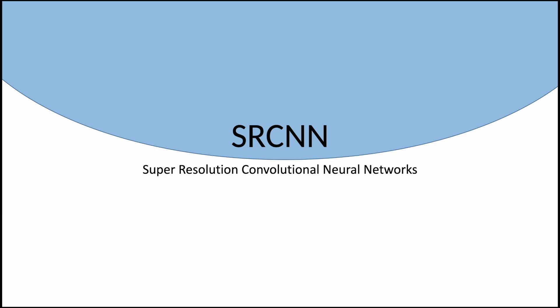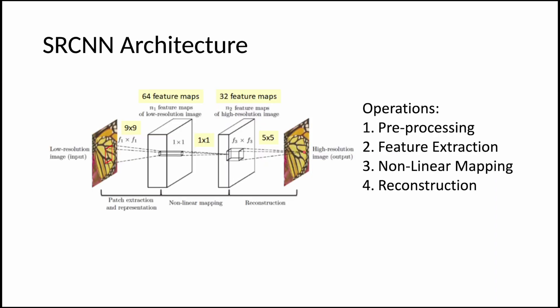SRCNN stands for Super Resolution Convolutional Neural Network. It was first introduced by Chow Dong and his colleagues, and it became the first learning-based super-resolution algorithm or model. It was a deep convolutional neural network that learns end-to-end mapping of low-resolution to high-resolution images. This neural network model comprises three layers responsible for performing four operations, namely preprocessing,